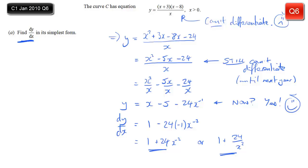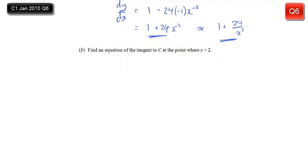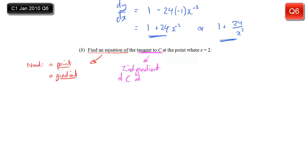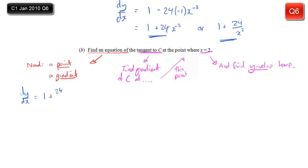Now we can differentiate: x gives 1; minus 5 goes to 0; and 24x to the minus 1 gives minus 1 times 24x to the power minus 2, which still has the minus 24 in front. So that simplifies to 1 plus 24x to the power minus 2, or 1 plus 24 over x squared. Either form is dy/dx in its simplest form. For part B, to find the tangent at x equals 2, we need a point and the gradient. Substituting x equals 2: dy/dx equals 1 plus 24 over 4, which is 1 plus 6, equals 7.